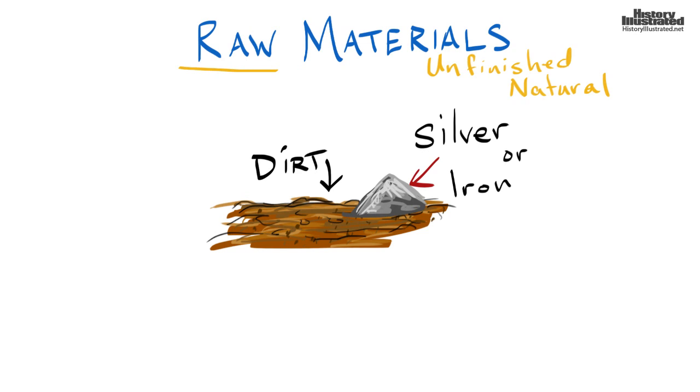Now, these things aren't finished yet. They're raw materials because typically people will dig up silver and turn them into coins or something that they can use, or especially iron. And they'll dig that up and they'll turn it into any kind of tools or weapons they can.